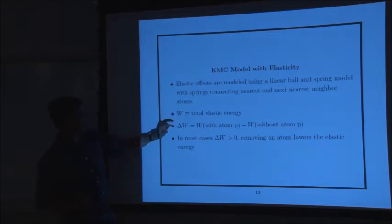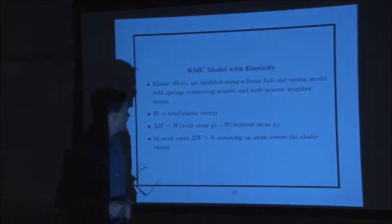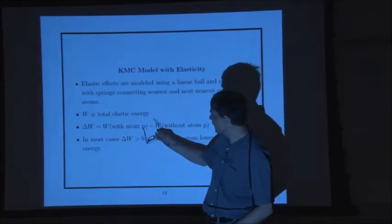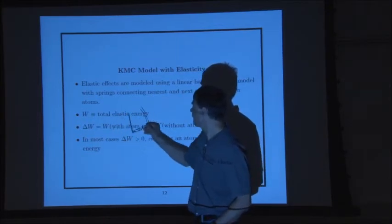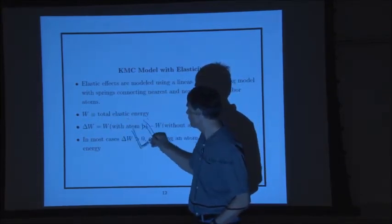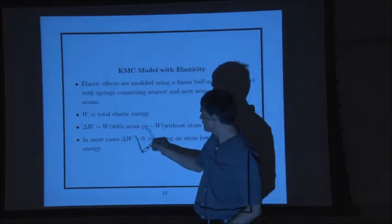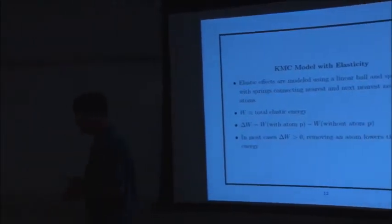Delta W is calculated as follows: you model the whole system as a ball-and-spring model and assume they're always in mechanical equilibrium. You define the total elastic energy as the energy in all those springs. Delta W is the change in energy when you remove atom P — you calculate the energy with the atom, remove it, and calculate the change. In general this number is positive, meaning strain tends to increase the hopping rate — it makes it easier for atoms to hop.